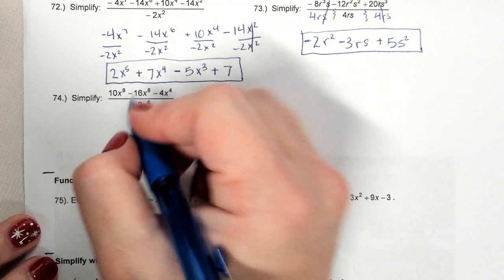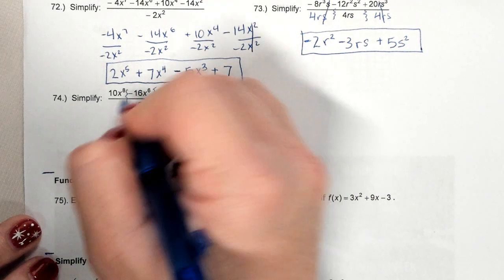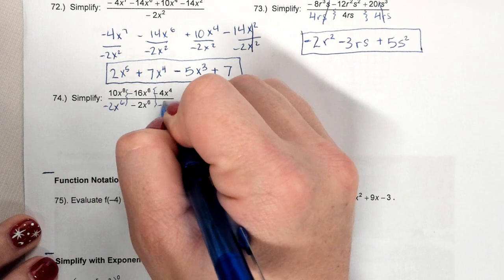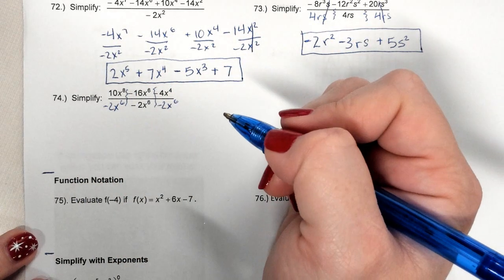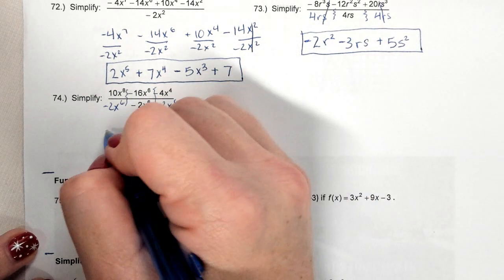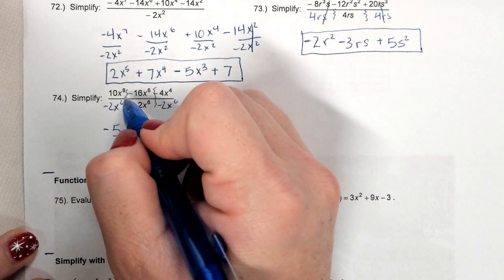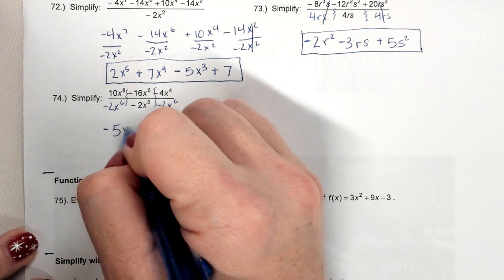Last one, again, super easy to just separate your terms. So 10 divided by -2 is -5. More x's on top, so 8 minus 6 is 2. Here the x's cancel.